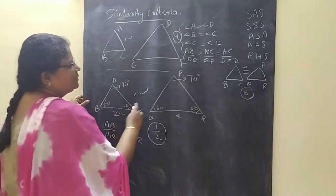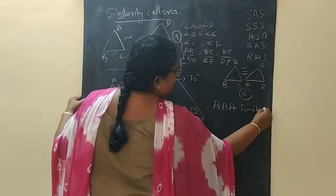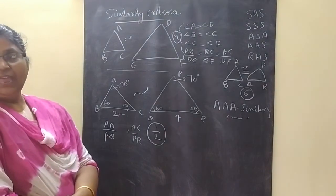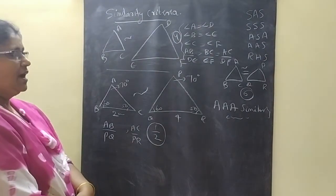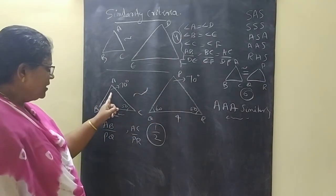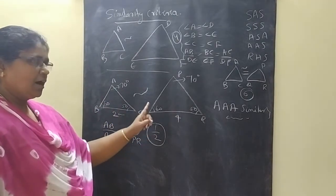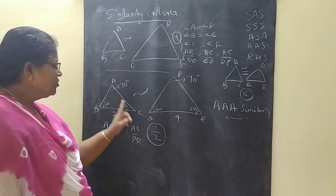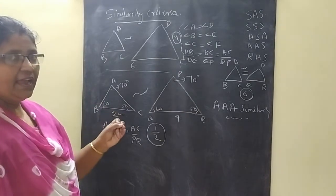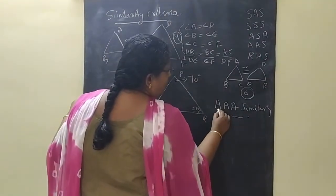This particular criteria is called the AAA similarity criteria. If in two triangles all the corresponding angles are equal, then the corresponding sides are also in the same ratio, and the two triangles are said to be similar. That is the AAA similarity criteria. But there is no need to prove all three angles equal.